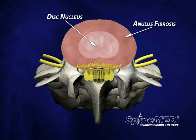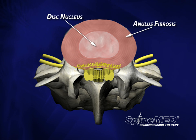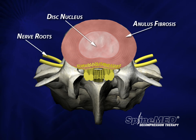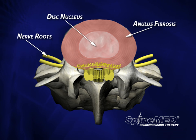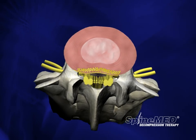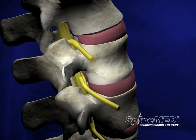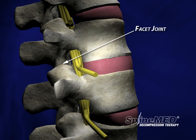In a healthy disc, the annulus is very pliable and capable of bending and flexing. Notice that the annulus has its own nerve supply, shown by the yellow dots along the outer wall. The spinal nerve roots, seen here in yellow, are extensions of the brain and spinal cord.